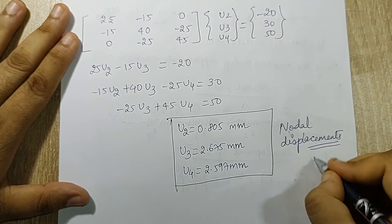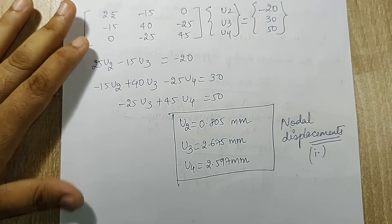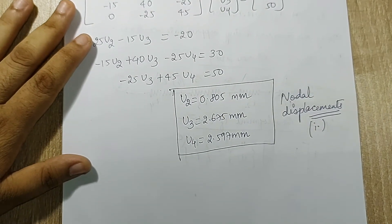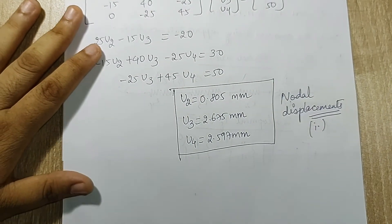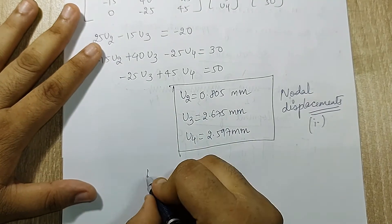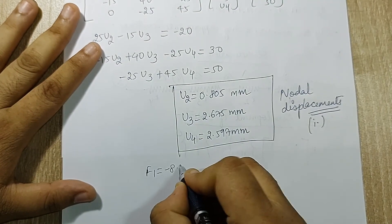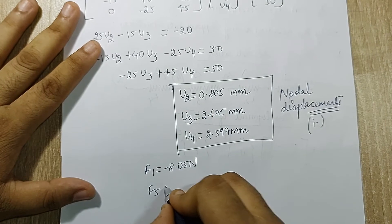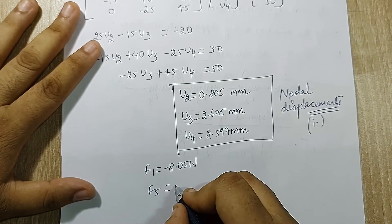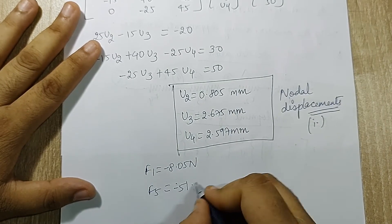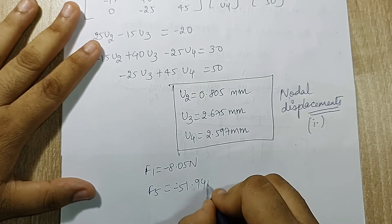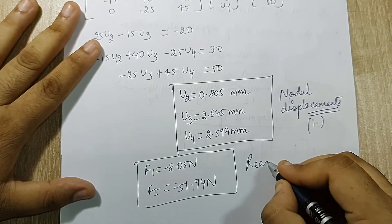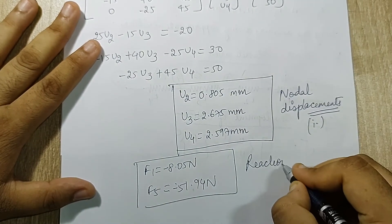Next I calculate the reaction forces F1 and F5 by revisiting the full equations. I get F1 = -8.05 N and F5 = -51.94 N. These are the reaction forces.